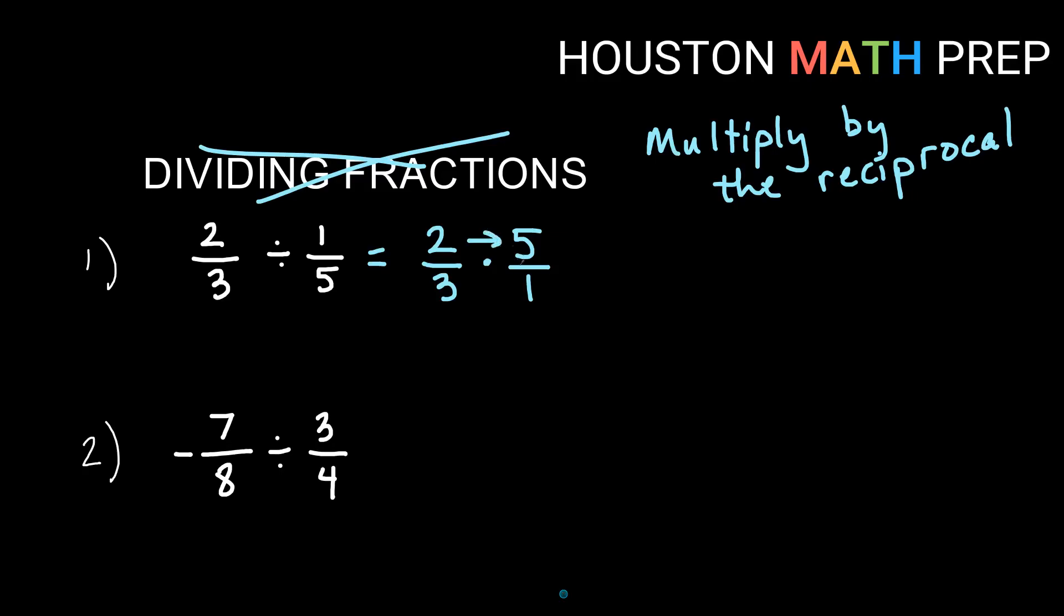Now multiplying fractions means we just go straight across once we get to this part. So two times five is ten, and three times one is three, and our answer is in lowest terms already, ten over three. Not so bad, huh? If you're good with multiplying, you just flip that second one over and use the reciprocal.